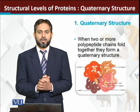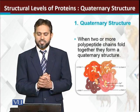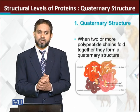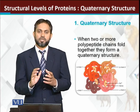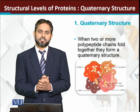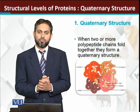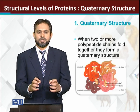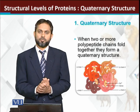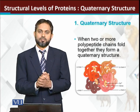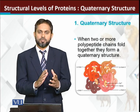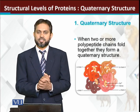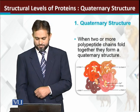For example, we have hemoglobin. If you look at this diagram, there are four different polypeptide chains which fold up into a compact molecule. This is the quaternary structure of hemoglobin.